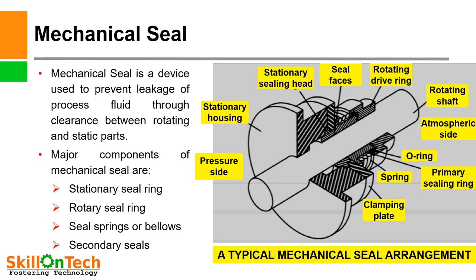A mechanical seal is a device used to prevent leakage of process fluid through clearances between rotating and static parts. The major components of mechanical seals are: stationary seal ring, rotary seal ring, seal spring or bellows, and secondary seals, which are O-rings and elastomers.